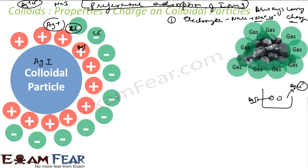The fourth theory discusses the source of charge as dissociation of surface molecules. For example, soap in water: the cation passes into the solvent and anions segregate to form micelles. This is also an explanation for the source of charge. But the best and most accepted explanation remains the preferential adsorption of ions.